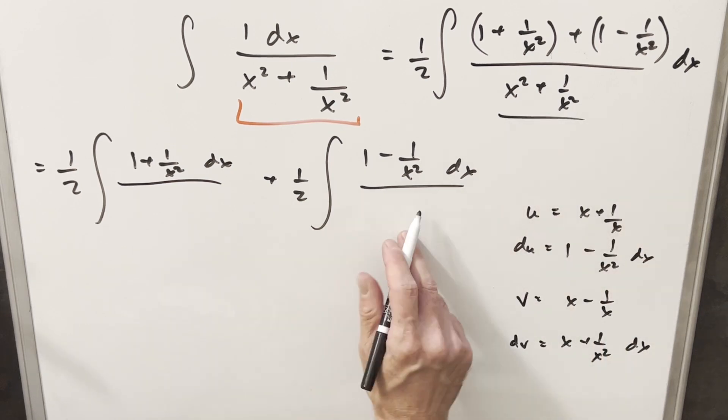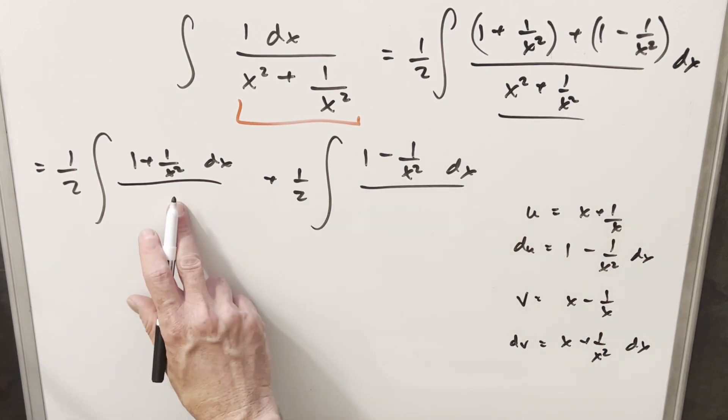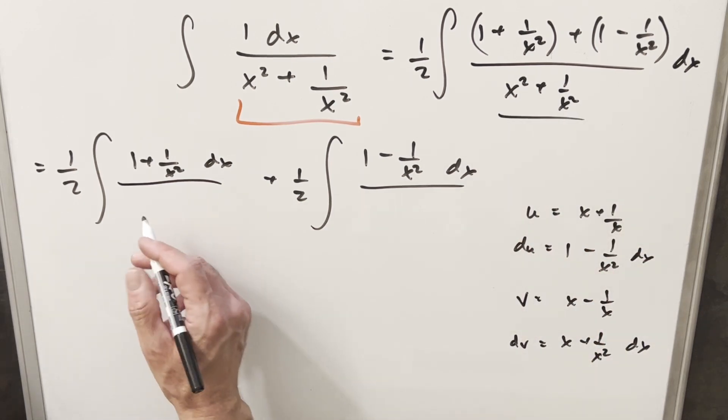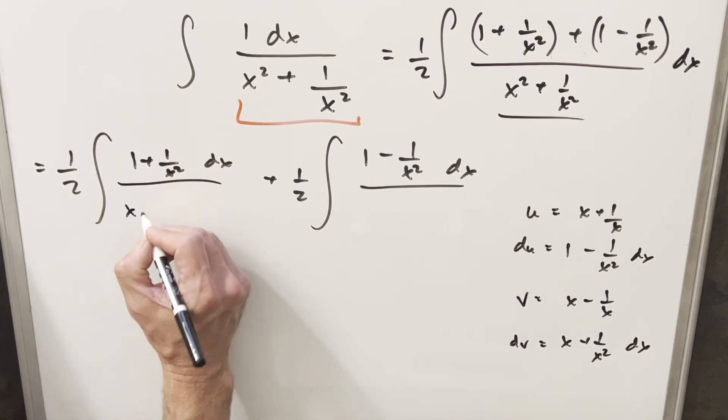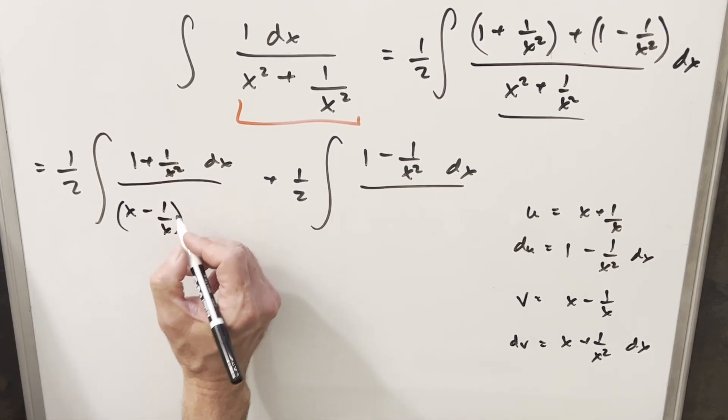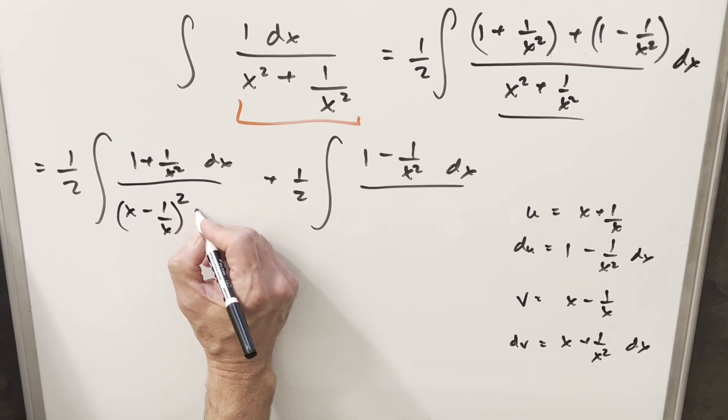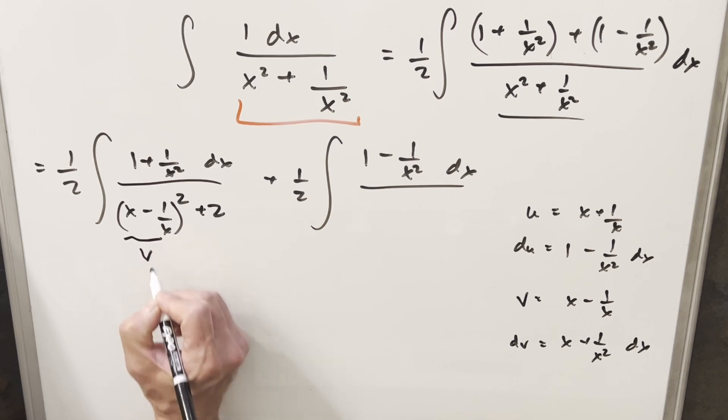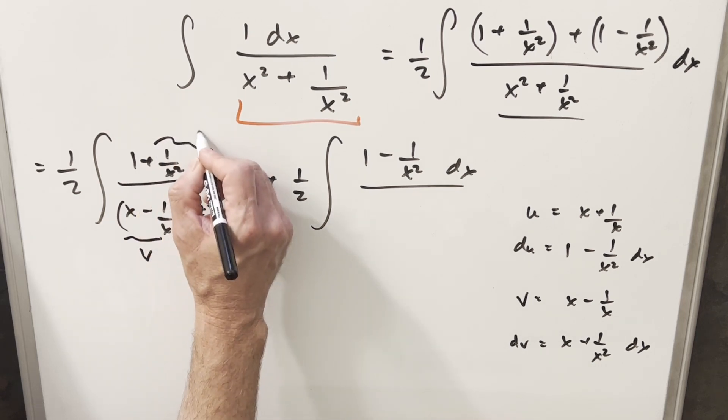So of course we're going to have this same denominator for each, but I'm just going to write it differently in order to use this derivative. So what we found from the previous board is I can write, for this one, I can write this as x minus 1 over x all squared and then we can add 2. And that way you'll notice that this piece right here is our v value, and this piece is our dv.